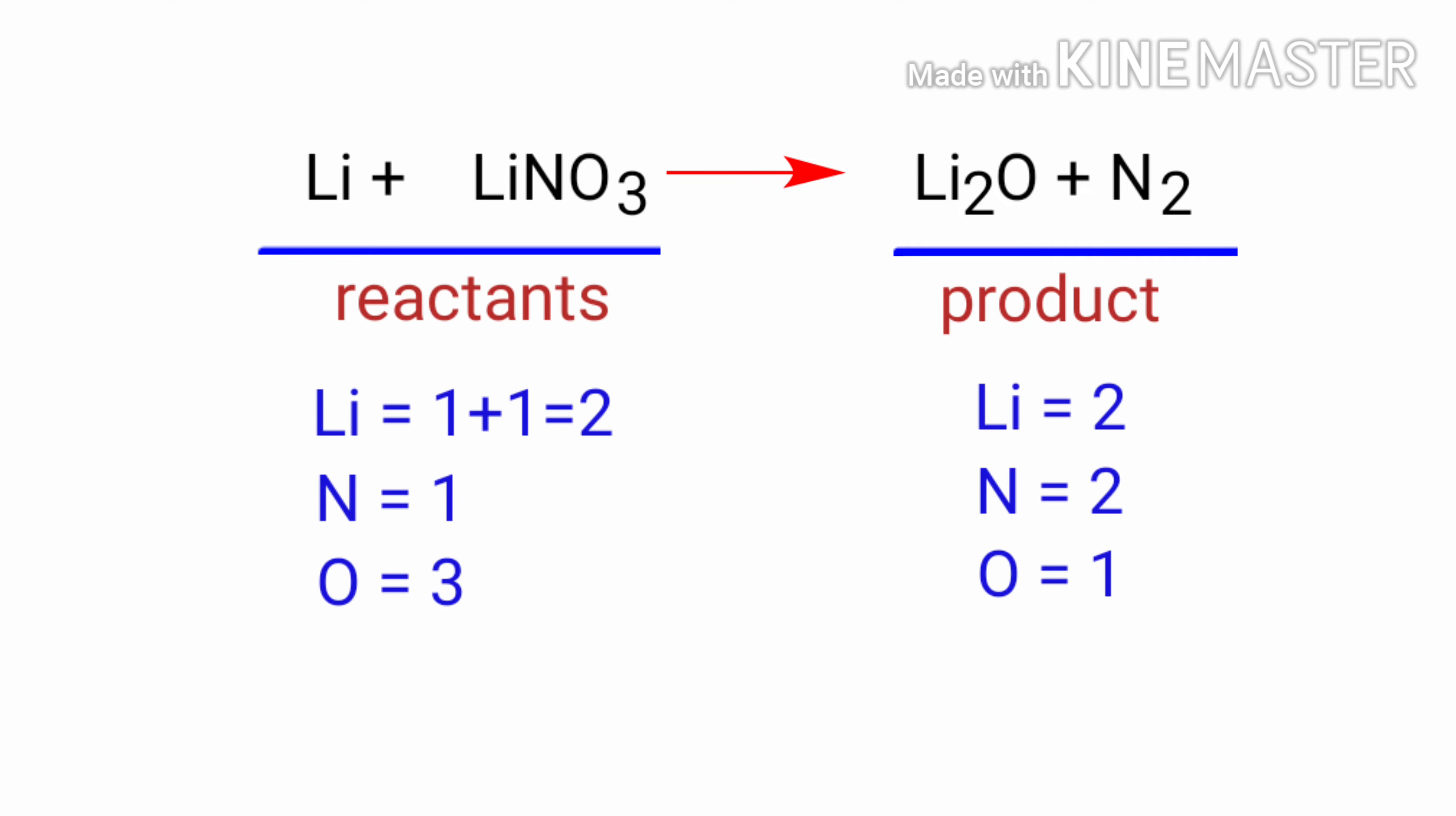In this equation, we need to balance the Nitrogen atoms first. To do this, we need to put a coefficient of 2 in front of LiNO₃. The Nitrogen atoms are balanced.